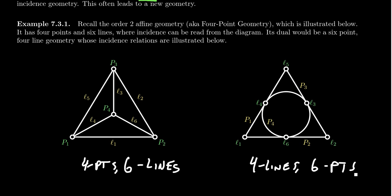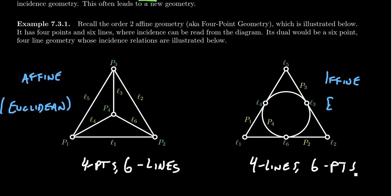The original geometry was an example of affine geometry — specifically affine geometry of order two. If you take the dual of an affine geometry, it's sometimes referred to as an effine geometry, though that term is not commonly used. Sometimes people would call this dual the Euclide dual — an amalgamation of Euclidean and dual — used to refer to the dual of any affine geometry.